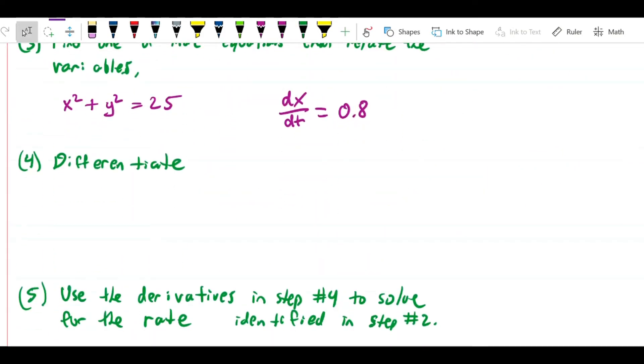Now what we want to do is differentiate. We have x squared plus y squared equals 25, and we're going to differentiate the entire equation with respect to t. The derivative of x squared is 2x, but we also need the derivative of x itself. When we did implicit differentiation, x was always the independent variable, but here it's not.